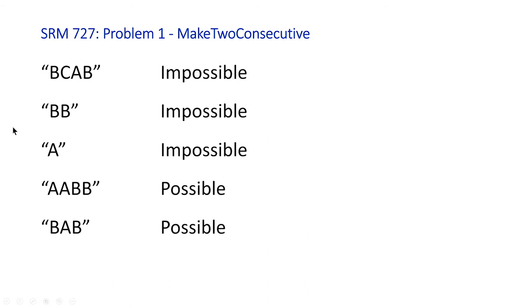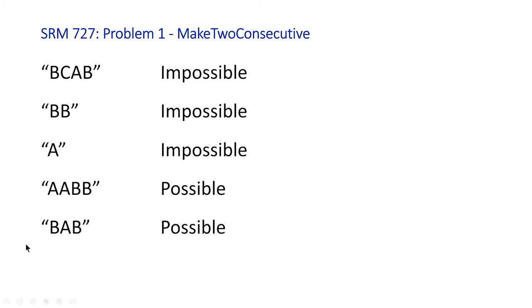For the first example 'bcab', regardless of which character you remove, the resulting string will not have two adjacent characters that are equal. But for the last two examples, the return value will be possible. A more interesting case is the final example — a corner case where the original string might not have any adjacent equal characters, but by removing one character, you can create an adjacency of two equal characters.